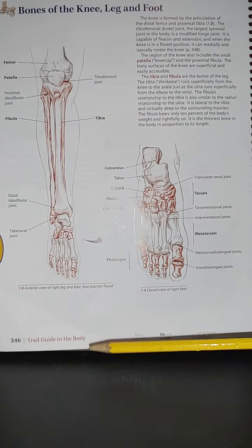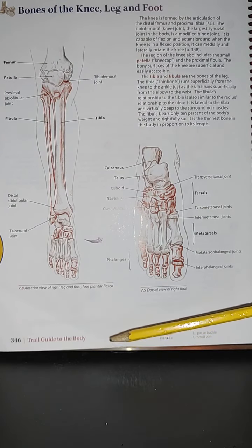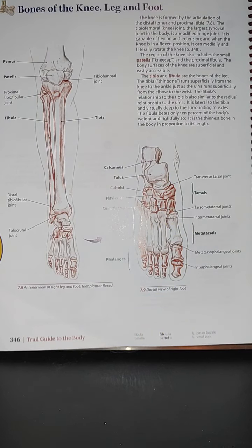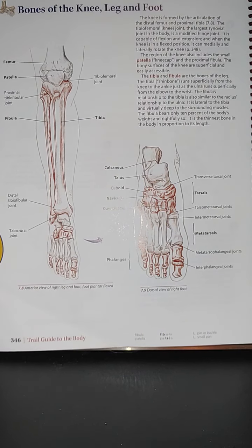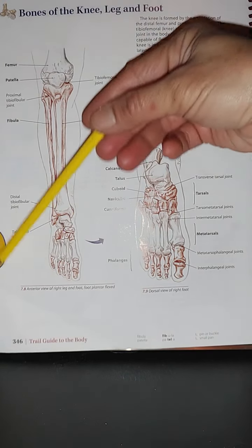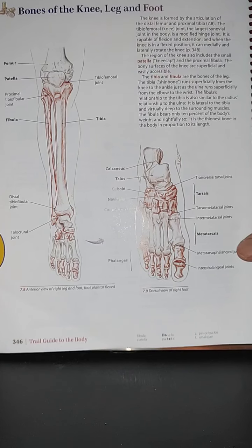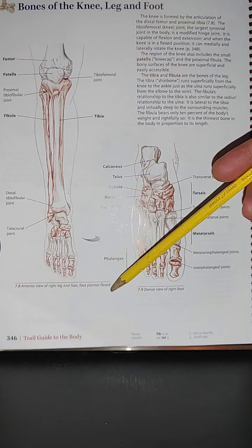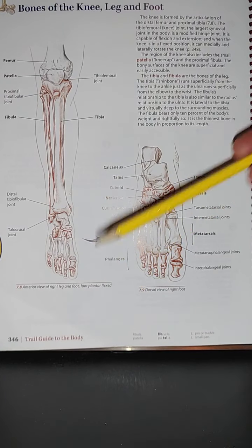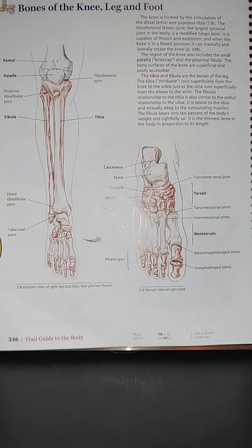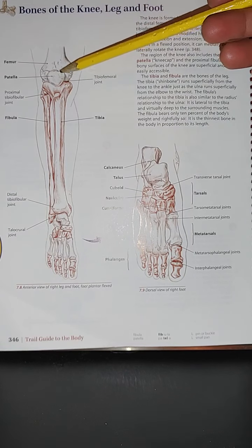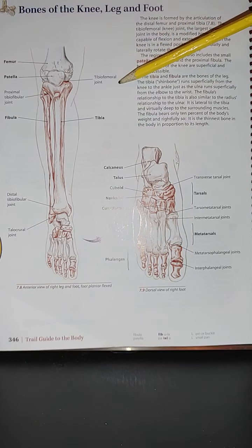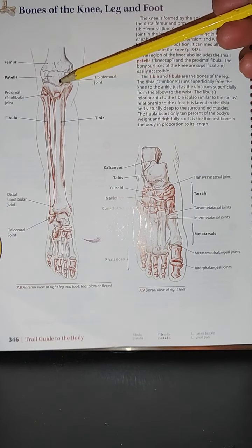We are at page 346 of our guide to the body, still featuring the leg and foot — this time the bones of the knee, leg, and foot. Looking at image 7.8, it's an interior view of the right leg and foot. As you can see, the foot is plantar flexed. We have here the femur, the patella, and the tibial-femoral joint.